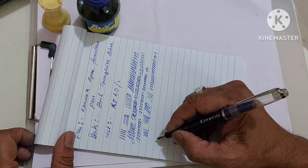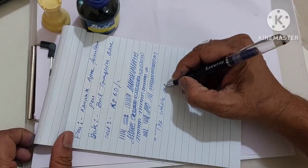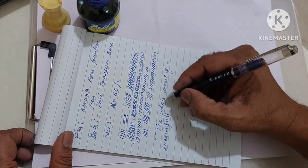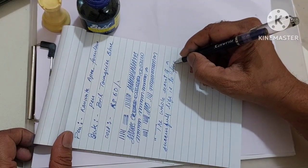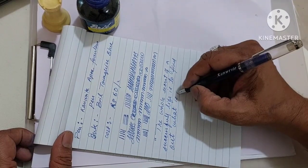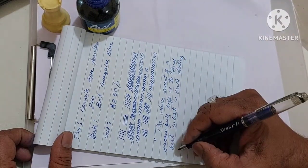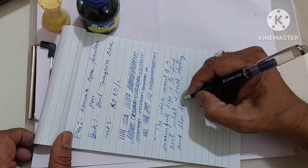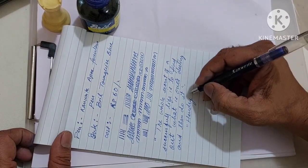Let me write and show you a quote over here. The whole secret of a successful life is to find out what is one's destiny and then do it. And it was given by Henry Ford.